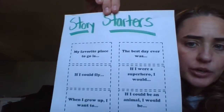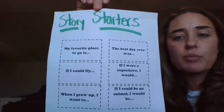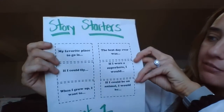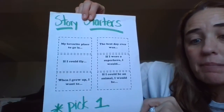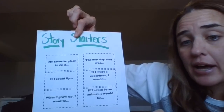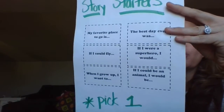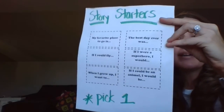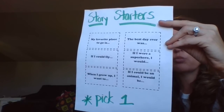So those are your story starters. I'm going to leave those up for just a minute so you can look at them. If you need to pause and figure out which one you want to write about, that's fine. I'll read them one more time: 'My favorite place to go is,' 'If I could fly,' 'When I grow up I want to,' 'The best day ever was,' 'If I were a superhero I would,' 'If I could be an animal I would be.' You only pick one — you only need to write one story, though if you want to do more that's fine.